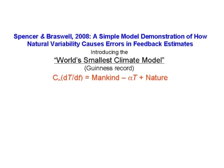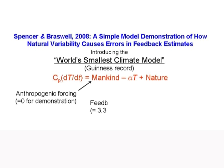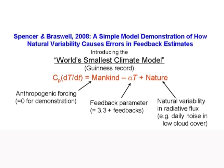All of those fancy climate models ultimately must collapse to this simple equation. All this says is, on the left-hand side, the change of temperature with time is caused by the stuff on the right-hand side. The modelers are interested in that term called mankind — that's mostly carbon dioxide. The next term is a feedback term. Feedback means when the temperature changes, it changes something else — that little alpha T represents all of the feedbacks in the climate system. And then there's nature.